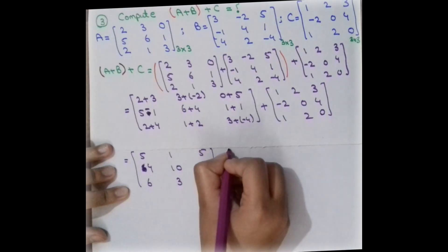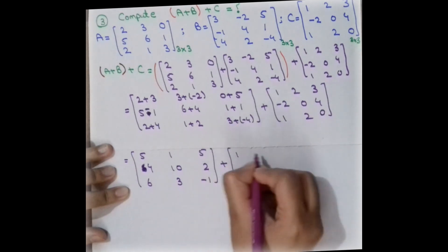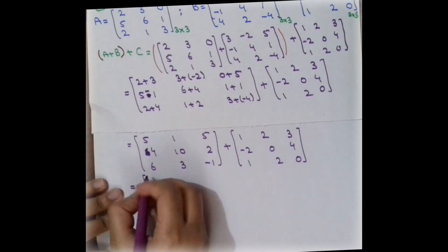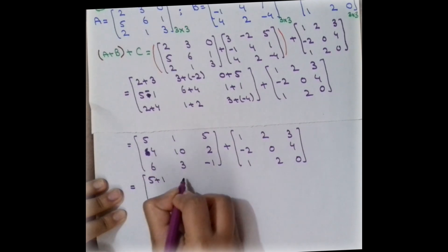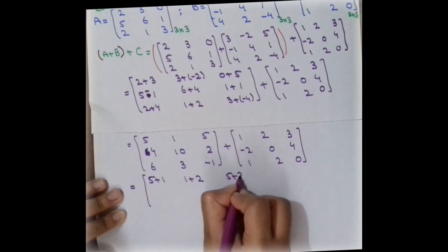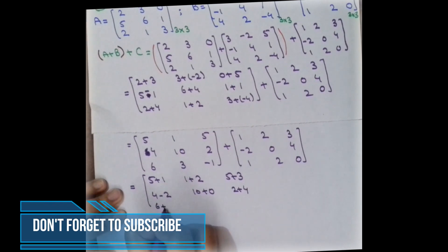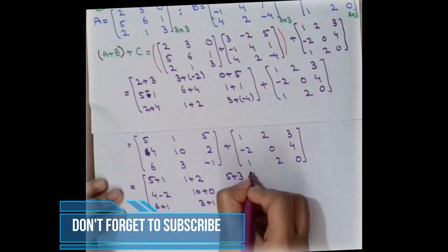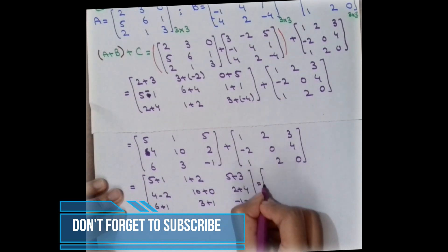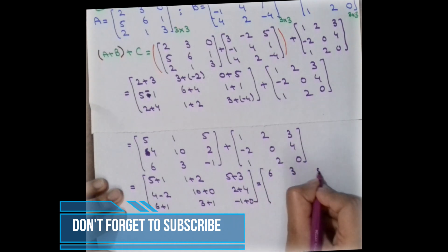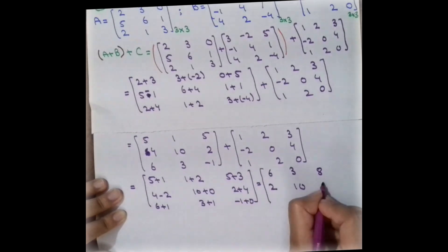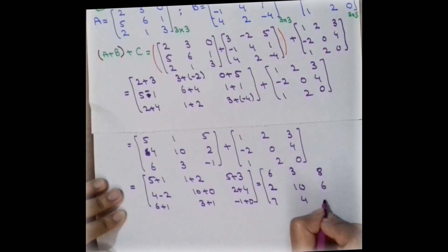Now we apply the addition procedure again, adding the result of A plus B with matrix C by adding corresponding entries: 5 plus 1, 1 plus 2, 5 plus 3, 4 plus minus 2, 10 plus 2, 10 plus 0, 2 plus 4, 6 plus 1, 3 plus 1, and minus 1 plus 0. The final answer is: 6, 3, 8, 2, 12, 10, 6, 7, 4, and minus 1.